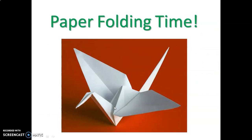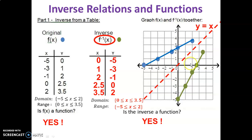Fold your paper along the dotted line — the mirror line — and notice when you fold it that the two functions, the inverse and its original, come together perfectly. That's because they are a perfect mirror image.